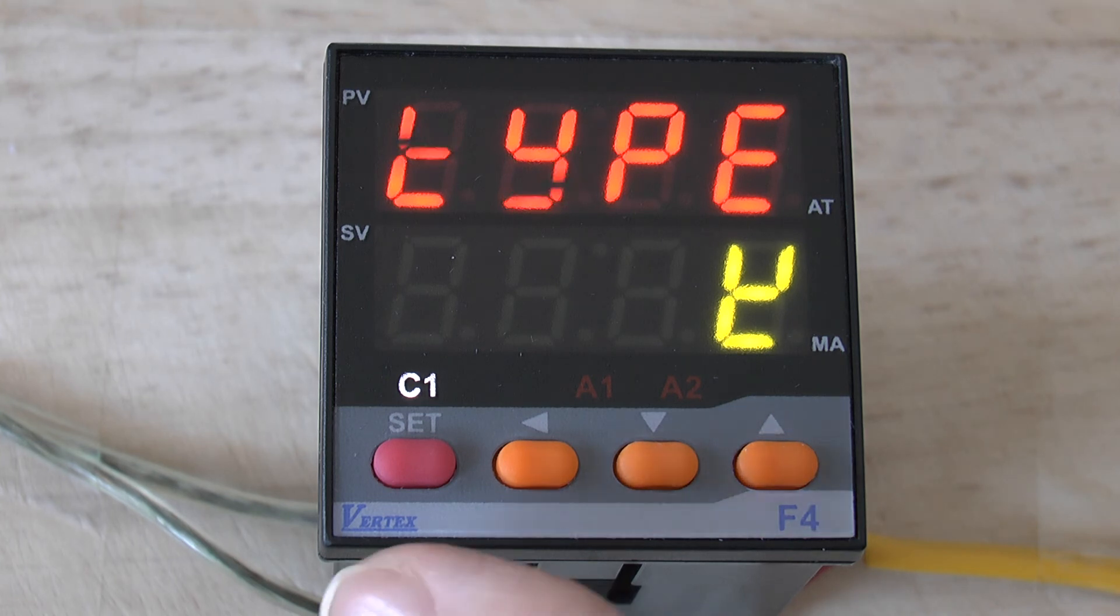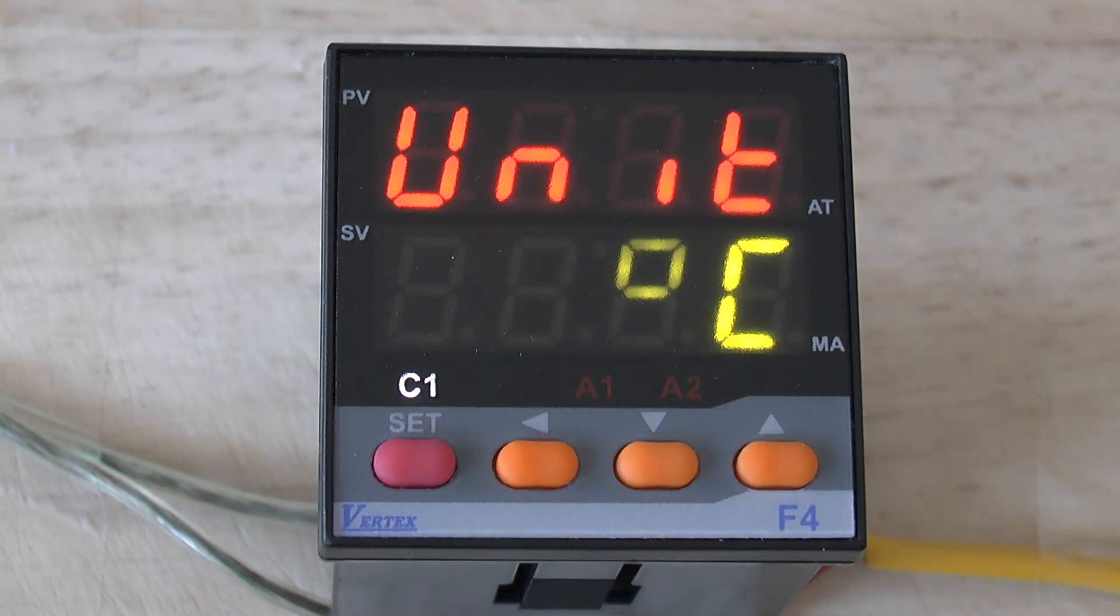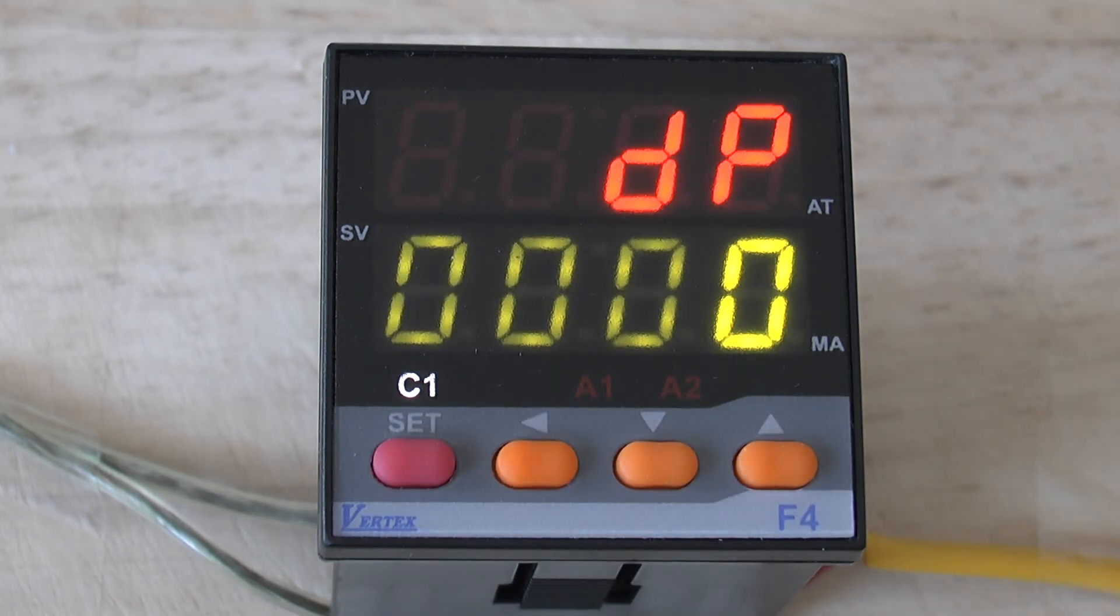The next parameter after this is the unit parameter and this is where you choose whether you're working in degree C or in degrees Fahrenheit. The next parameter is where you would select a decimal point if you require one.